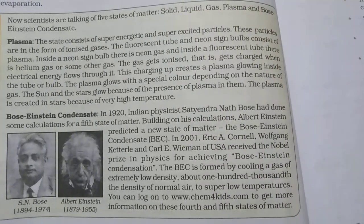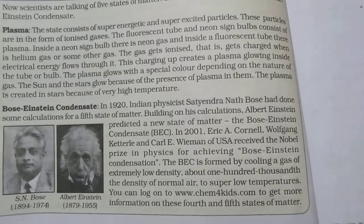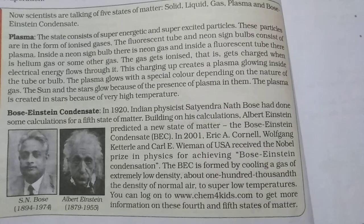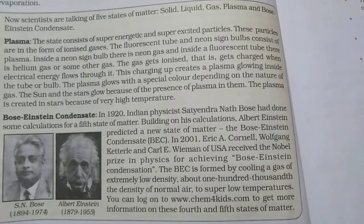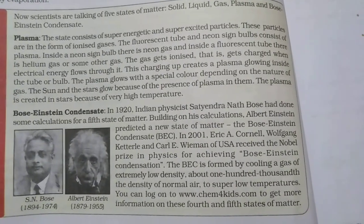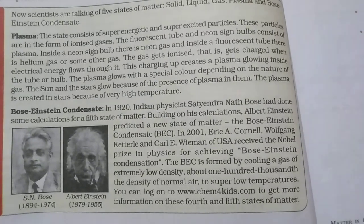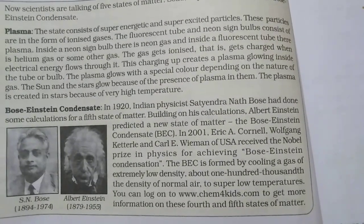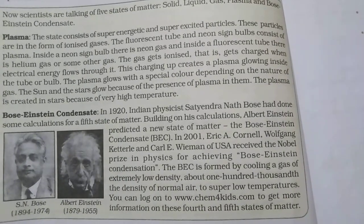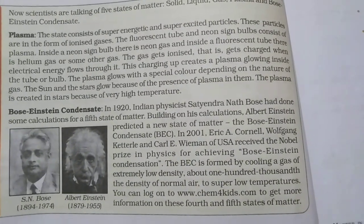Plasma can also be made on Earth by passing electricity through a glass tube, which is known as a discharge tube. Fluorescent tubes and neon sign bulbs also form plasma when they are switched on. A fluorescent tube may contain helium gas or any other inert gas.